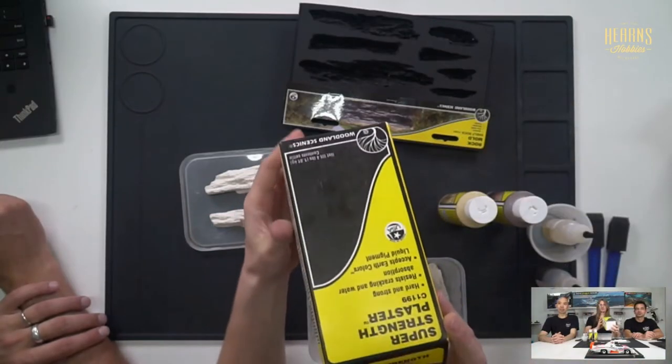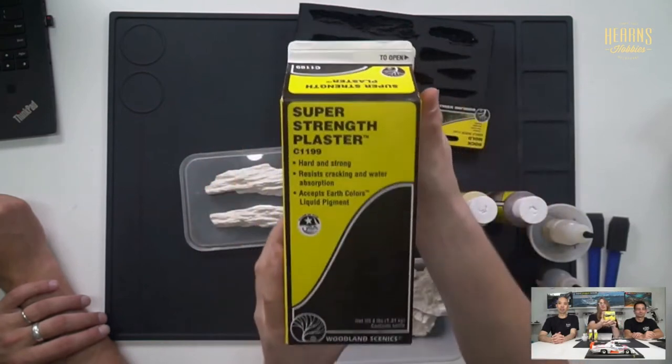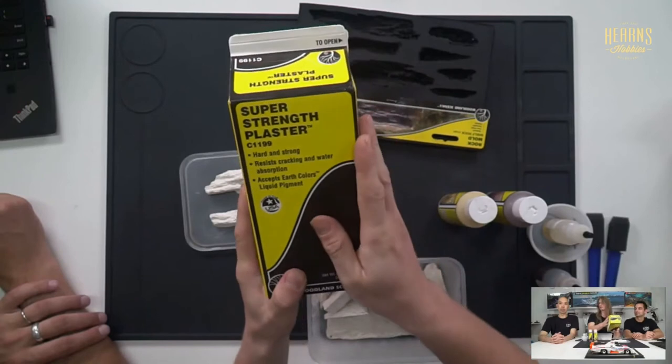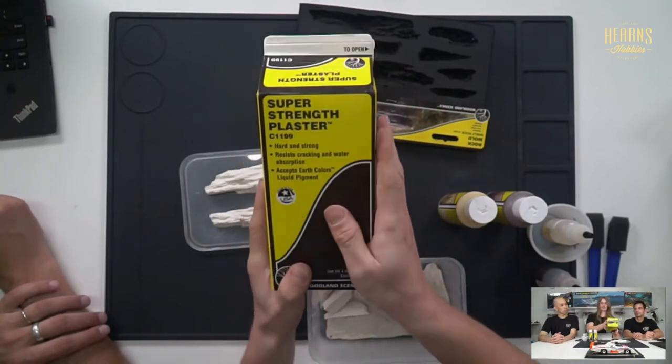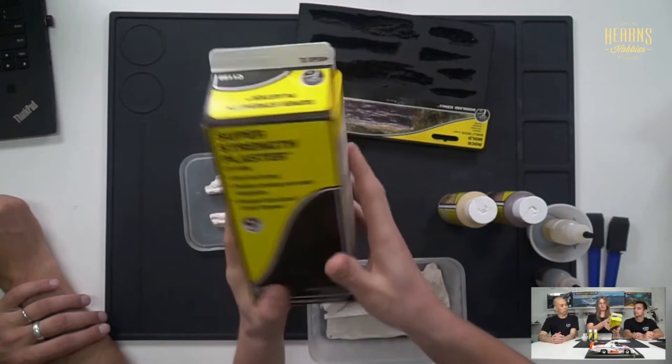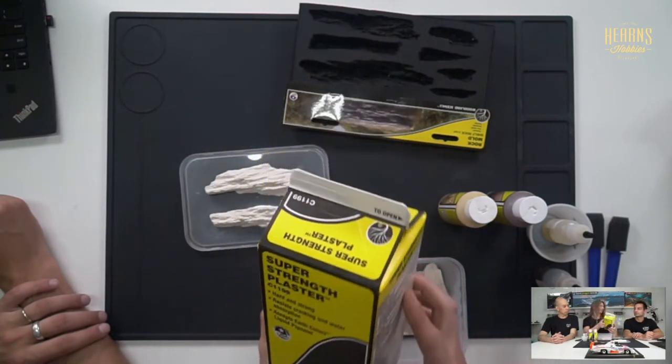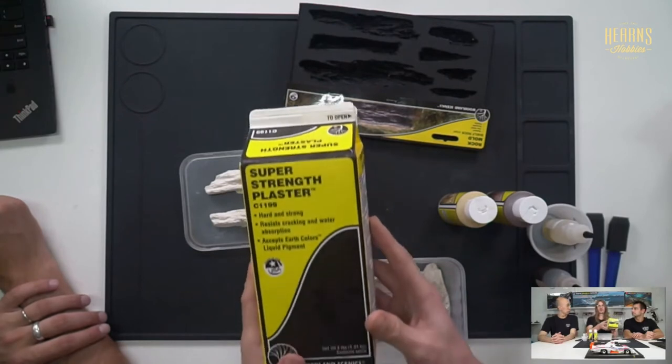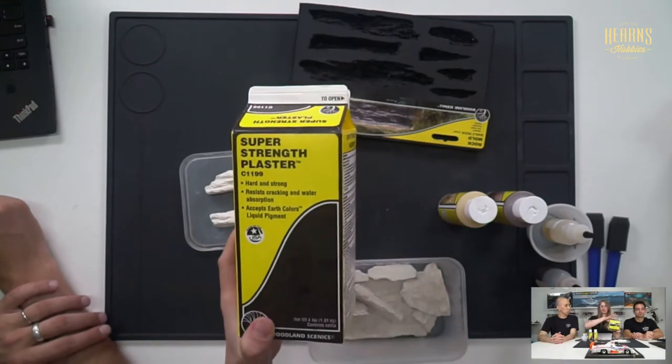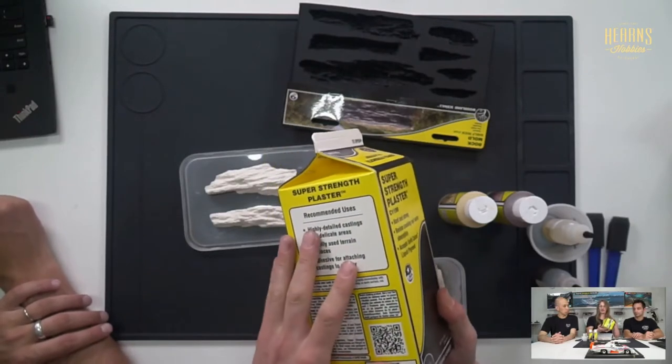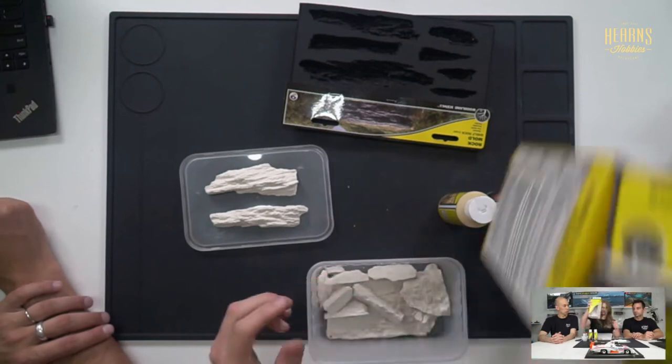Basically, Woodland Scenics does quite a few different varieties of plaster. This is a super strength. This is what they recommend for plaster moldings. There's probably about six different ones, and they have information regarding what you use it for. So not all plasters are created equal. Some are a lot lighter than others and they're great for when you're covering large areas of terrain or weight would be an issue. In this case, strength is the most important factor and maintaining that detail.